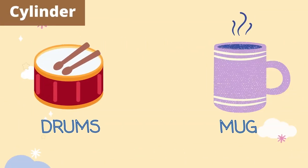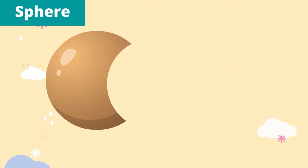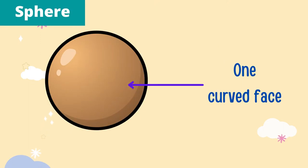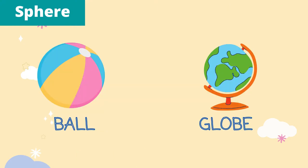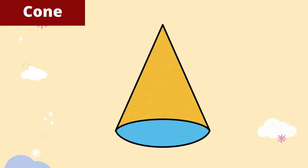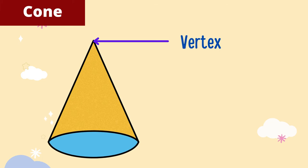A sphere has one curved face. It has no edge and no vertex. For example, a sphere-shaped ball and a globe. Lastly, we have a cone. It has one vertex, one curved face, and one flat face.